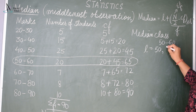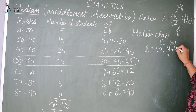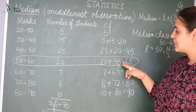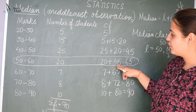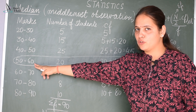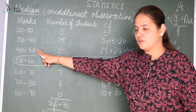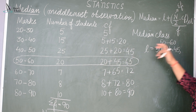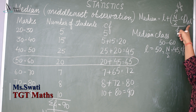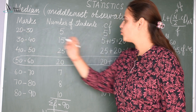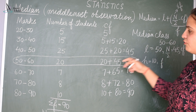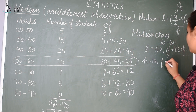N/2 is already found to be 45. CF is the cumulative frequency preceding the median class. The median class is 50 to 60, so its preceding class is 40 to 50, and its corresponding cumulative frequency is 45. So CF = 45. H is the width of the class interval: 30 minus 20 is 10, so H = 10. F is the frequency of the median class, which is 20.